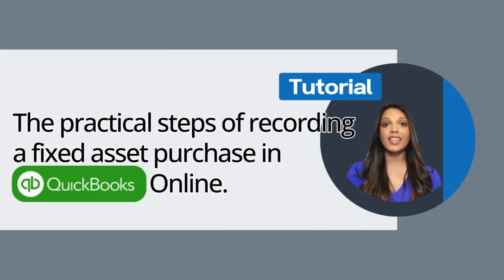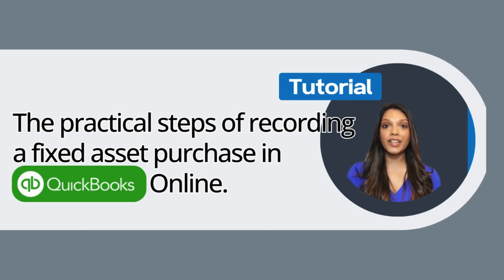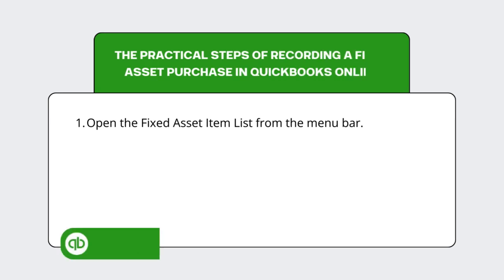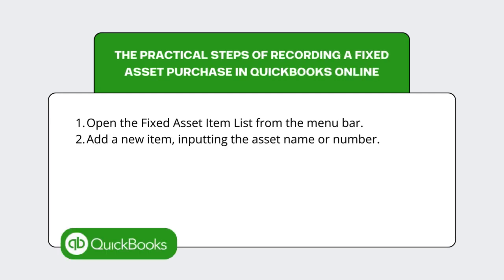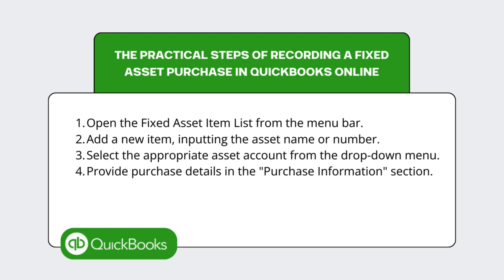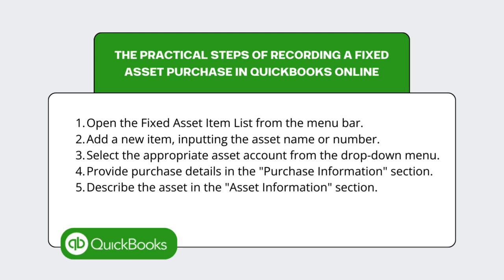Let's dive into the practical steps of recording a fixed asset purchase in QuickBooks Online. Open the fixed asset item list from the menu bar. Add a new item, inputting the asset's name or number. Select the appropriate asset account from the drop-down menu. Provide purchase details in the Purchase Information section. Describe the asset in the Asset Information section, and save the entry by clicking OK.